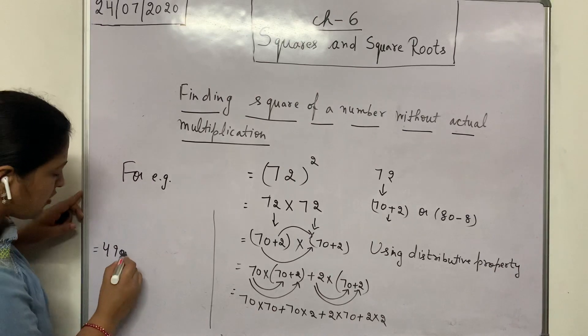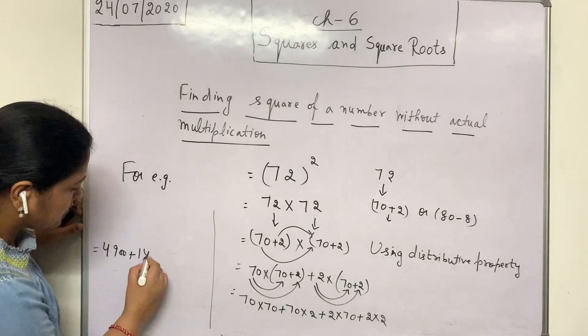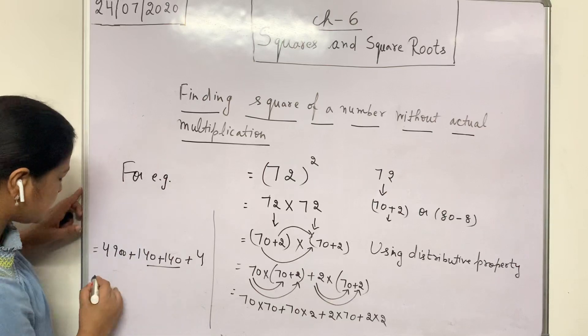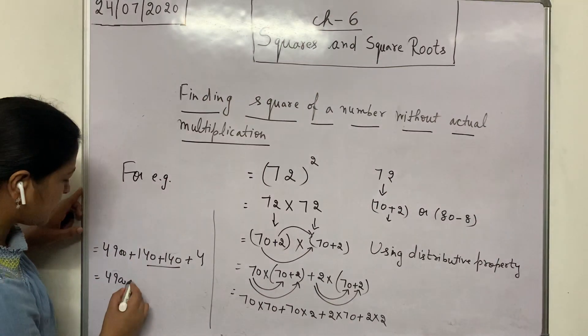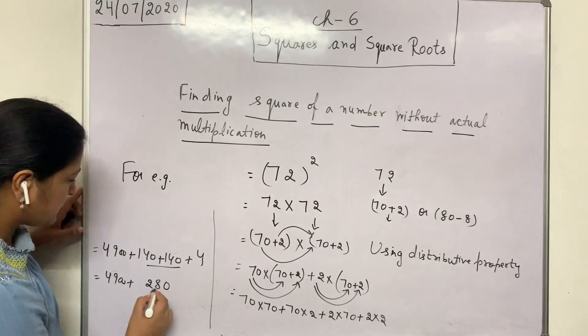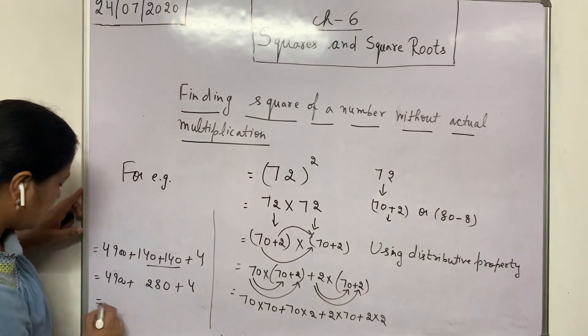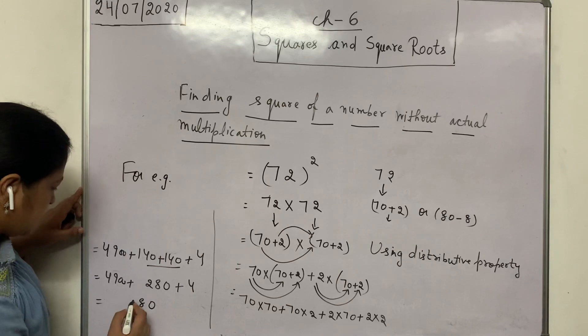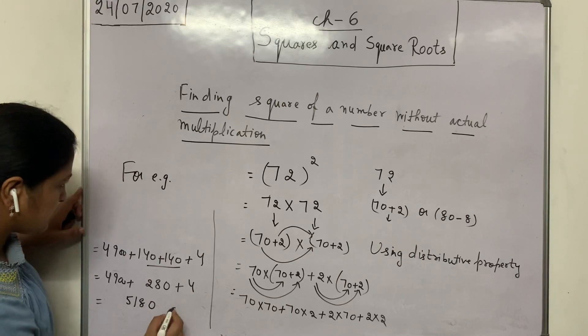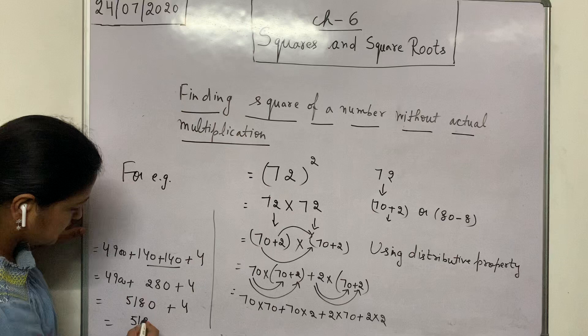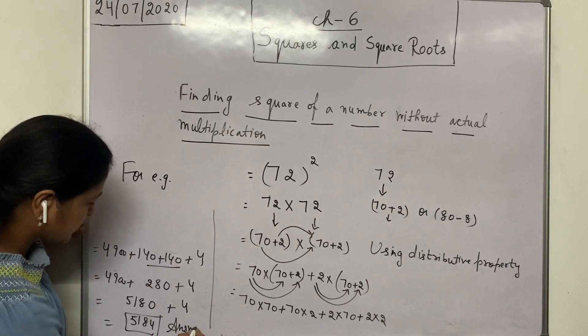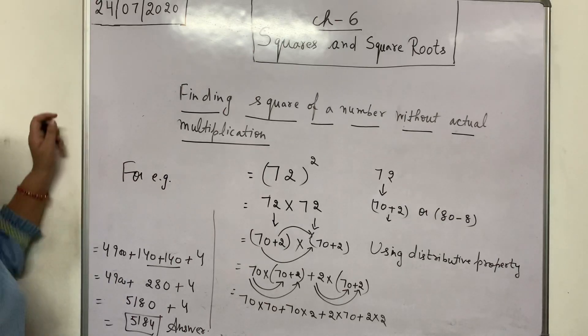Then it will be 4900. Only we can do calculation. 140 and 4. See, so easy to add them. 4900 and it will be 280. 50, and then it will be 0, 8, and then, so this is the answer, 5184.